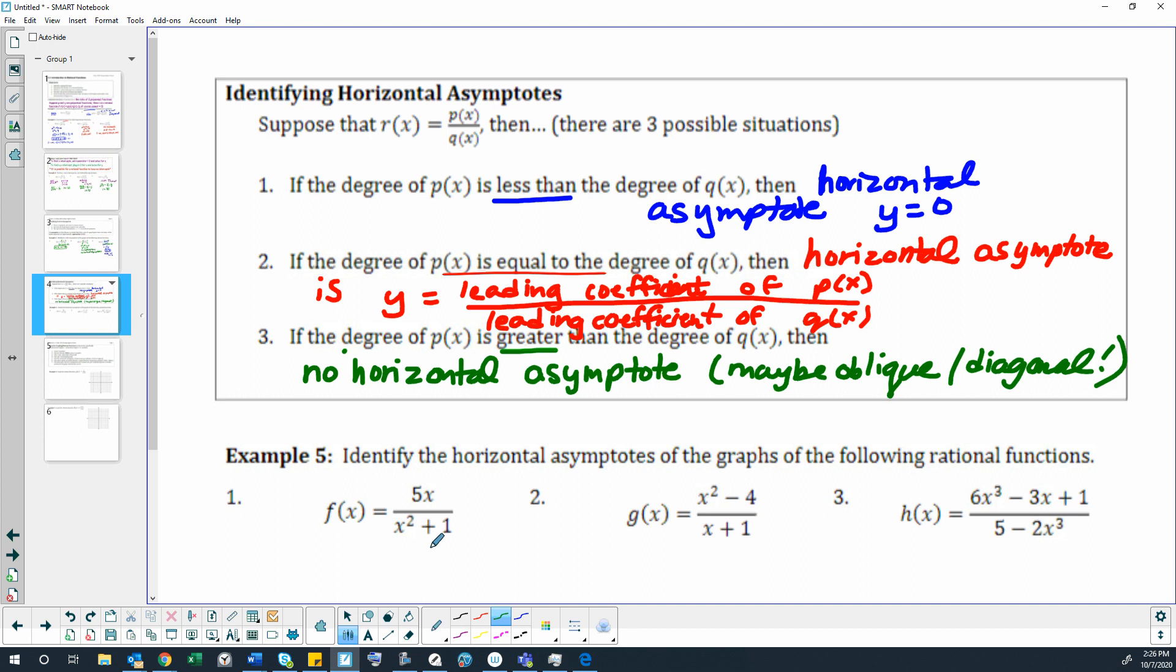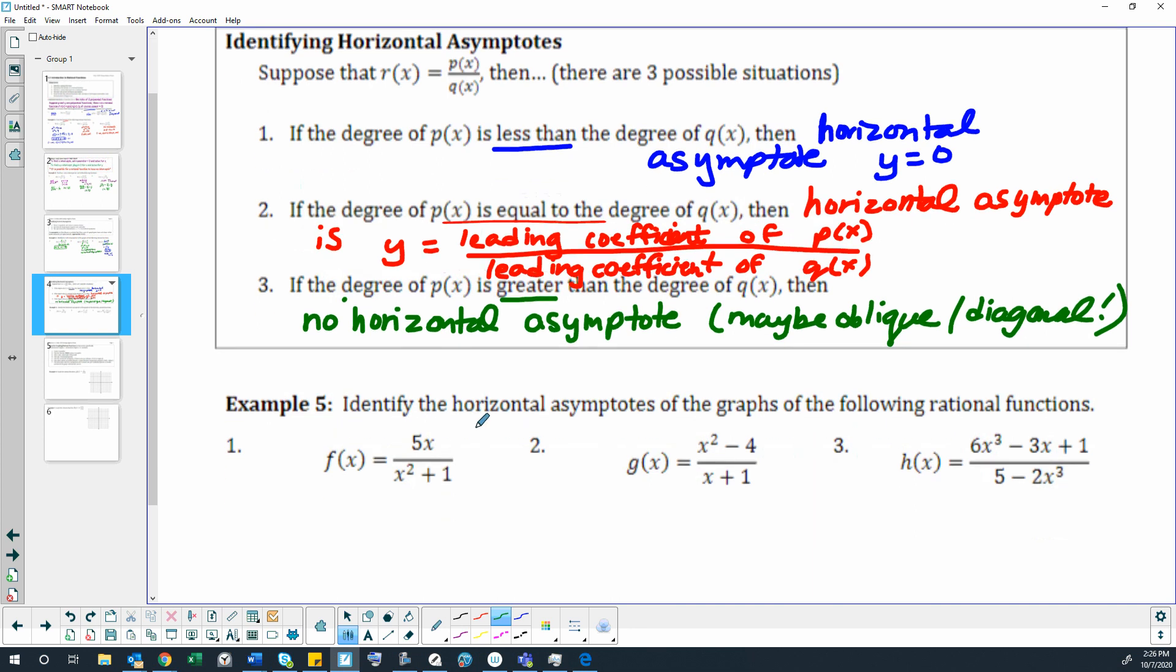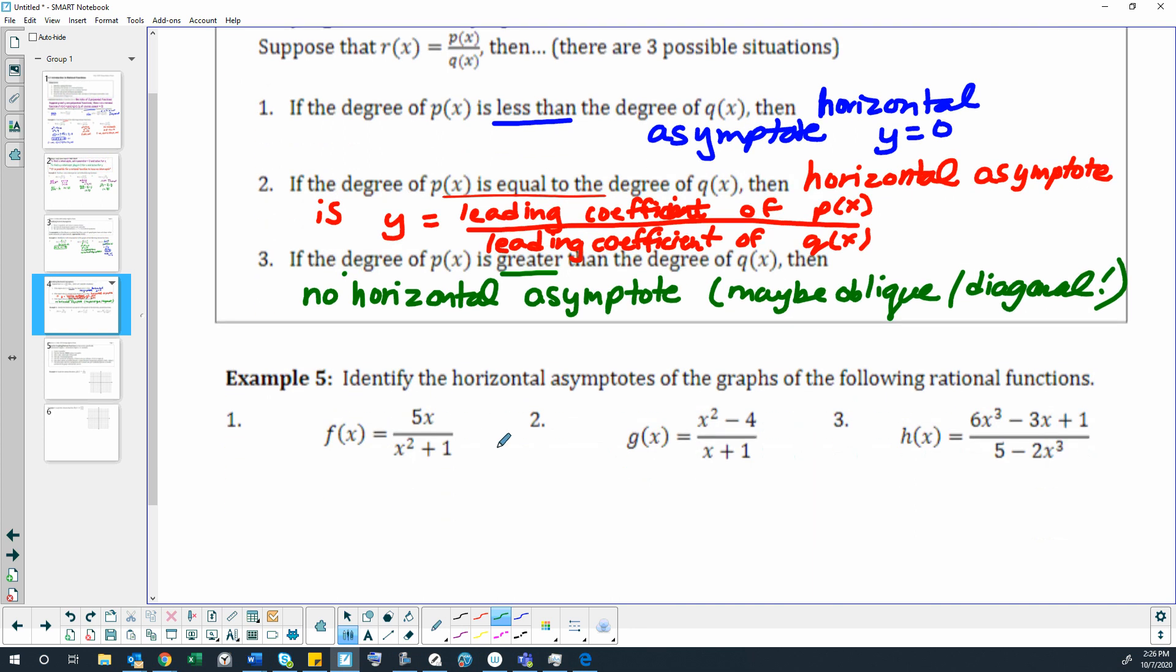Let's practice this. Example number five: identify the horizontal asymptotes of the graphs of the following rational functions. Question one. We have our numerator, which is degree one. How do we know it's degree one? Because the highest exponent is one. There really is no exponent. There's an x, and the x would have a non-written or invisible exponent of one, making that a degree one.